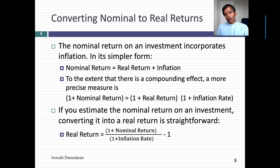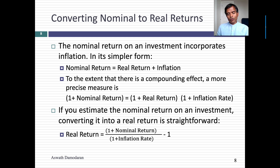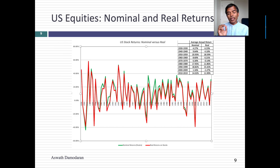If I gave you a nominal return and asked you to convert to a real return, here's what you do: take 1 plus the nominal return — for 15%, that's 1.15 — and if your inflation rate is 5%, divide 1.15 by 1.05, then subtract 1. You come up with a real return of just over 9%. Converting nominal to real returns is a skill we all need to have, because even though we earn nominal returns, ultimately we get to keep real returns.